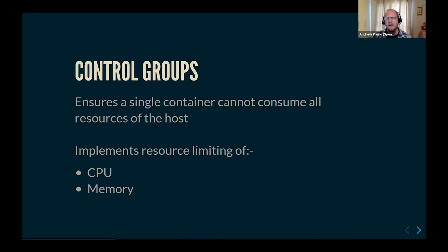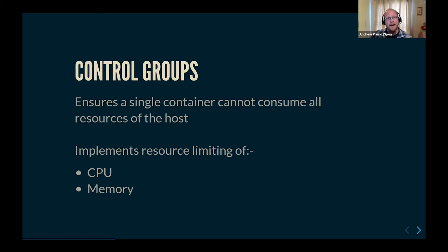There are three different constructs in Linux that provide that isolation. The first one is something called control groups. Control groups control the resources of the host that a container can utilize. We can see this in action when we spin up a container and use the memory flag or the CPUs flag — that limits the amount of CPU and memory that a container can use on the host. In the background, control groups are being created that enforce those limits. This is especially important when running multiple containers on a host to avoid the noisy neighbor syndrome.